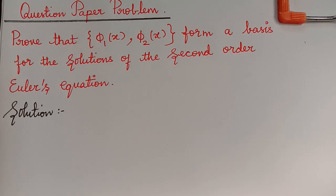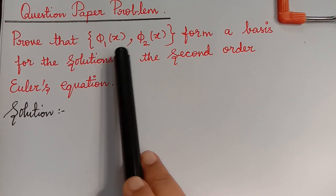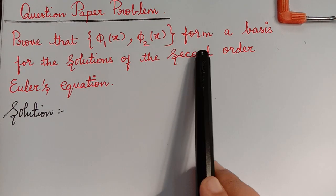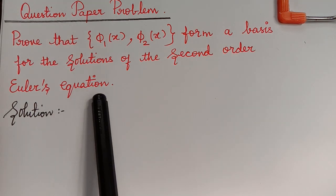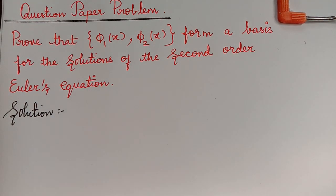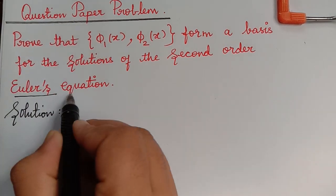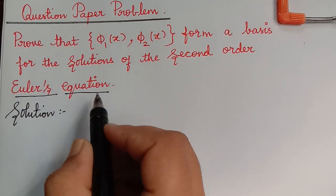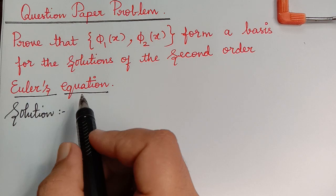Hello students. Here we have a question paper problem: prove that φ₁(x), φ₂(x) form a basis for the solutions of the second order Euler equation. In our previous lecture we learned about the Euler equation, where we saw the solution of the Euler equation.